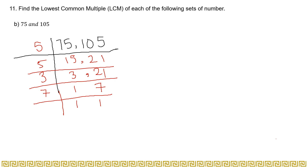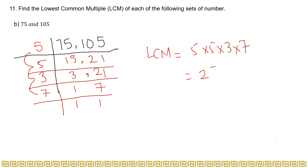You have to divide the numbers continuously until you reach 1. To find the LCM, you multiply the prime numbers together: 5 × 5 × 3 × 7. Now 5×5=25, then multiply by 3, then by 7, giving you 525. That is the LCM for Part B. This is simple — you just do the prime factorization and multiply the numbers together to get your LCM.